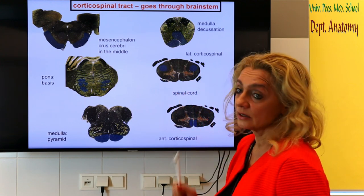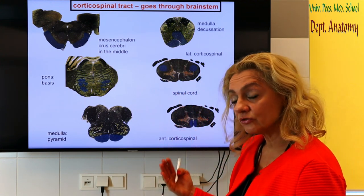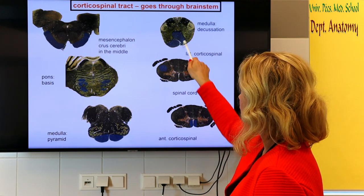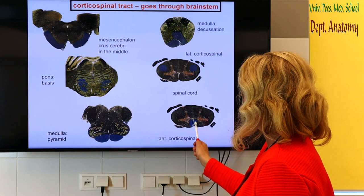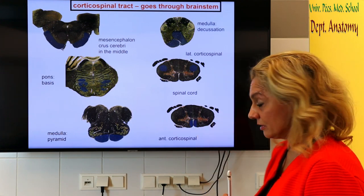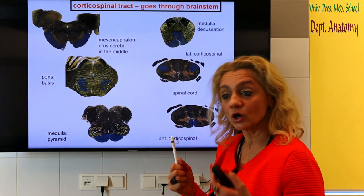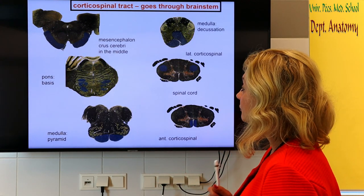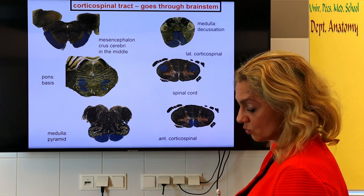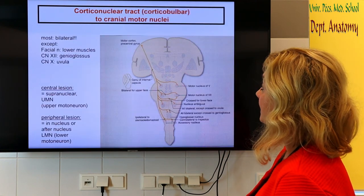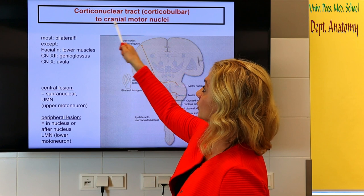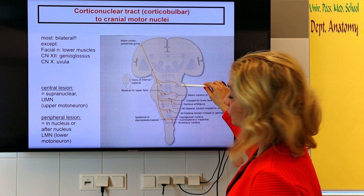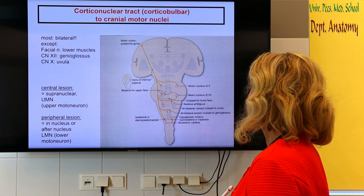After the decussation, we have the lateral and anterior corticospinal tracts. The lateral tract runs in the lateral funiculus of the spinal cord — these are the fibers that already crossed at the level of the medulla. The anterior tract is the one that did not cross at the level of the medulla and only crosses at the level of innervation. This spinal cord part we have already discussed, and now we're going to focus on the corticonuclear tract, which goes to the motor nuclei of the brainstem.